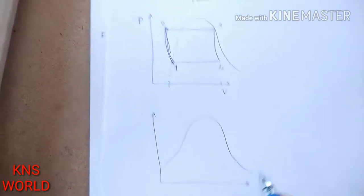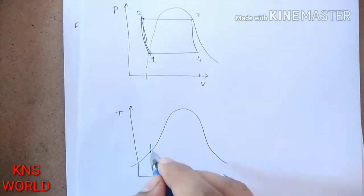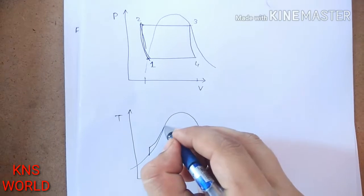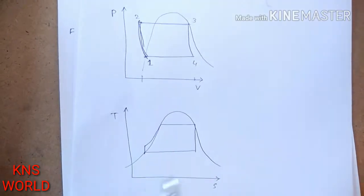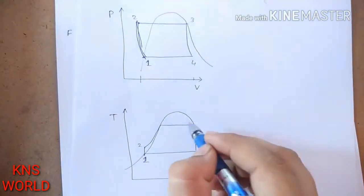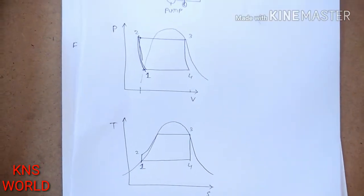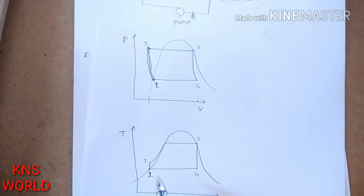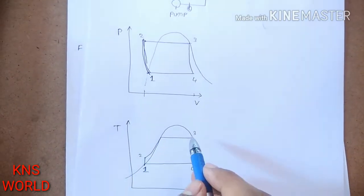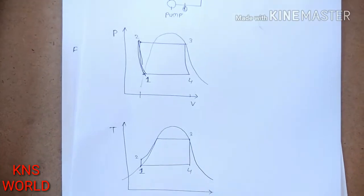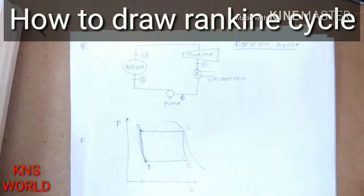Now we study the TS diagram — temperature versus entropy. The process starts at point one, goes to two, then three, then four. From one to two, temperature increases at constant entropy. From two to three, entropy increases — this is the boiler process.